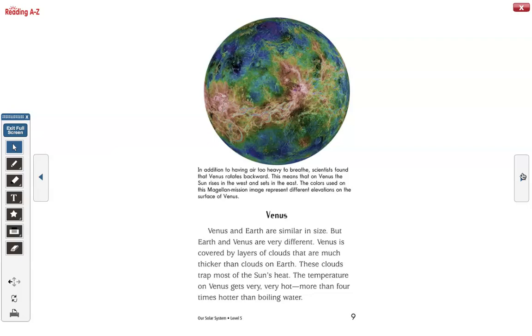In addition to having air too heavy debris, scientists found that Venus rotates backward. This means that on Venus, the Sun rises in the west and sets in the east. The colors used on the Magellan mission image represent different elevations on the surface of Venus. Venus.